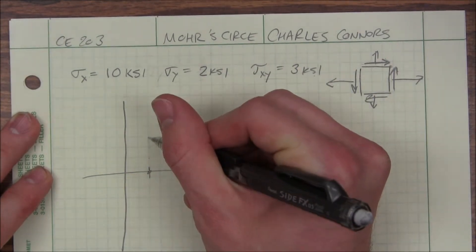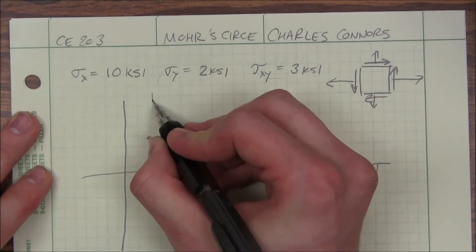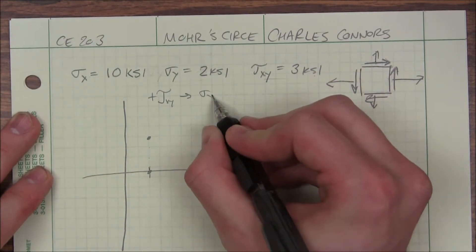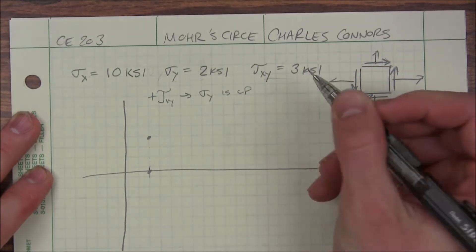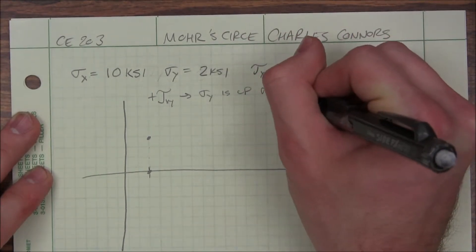1, 2, 3. I'll write that down real quick. A positive tau XY means that my sigma Y is up above this axis, and that my sigma X is below.